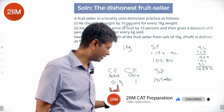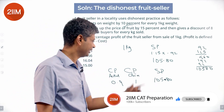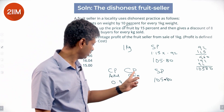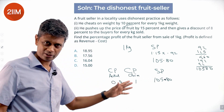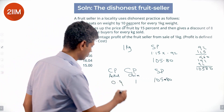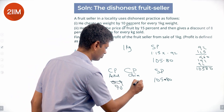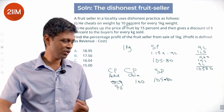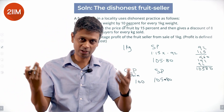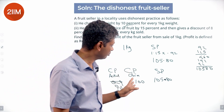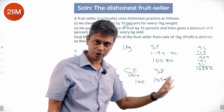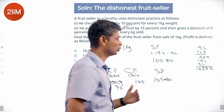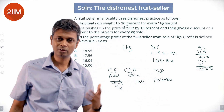The percentage profit is selling price divided by cost price minus 1. That's 1.0580 divided by 0.92 — wait, it's not 0.9, it should be 90 in the 100 framework. So 1.15 × 0.92 = 1.0580, which maps to 105.80 in the 100-base framework.